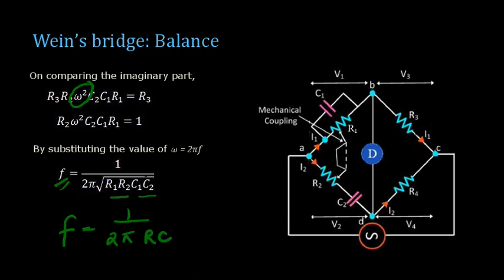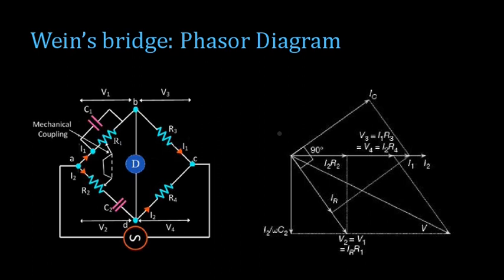Now we will just take a few moments to explain the phasor diagram of its Wein's bridge. The phasor diagram again is the relationship between current and voltage which is there in this circuit. We will start with arm AD. In arm AD, we have two impedances, R2 as well as impedances corresponding to C2. If you take I2 as a reference, I2 is taken as a reference here. I2 R2 will be in phase with I2.